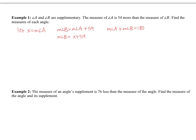We represent the measure of angle A using the variable x, and the measure of angle B can be expressed as x plus 54. So x plus (x plus 54) equals 180. You do need to set up an equation to solve — no guessing and checking, because the skill we want you to have is to be able to set up the equation given the relationship between the two angles.